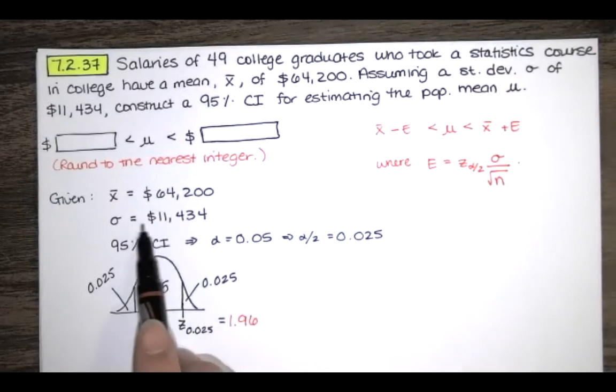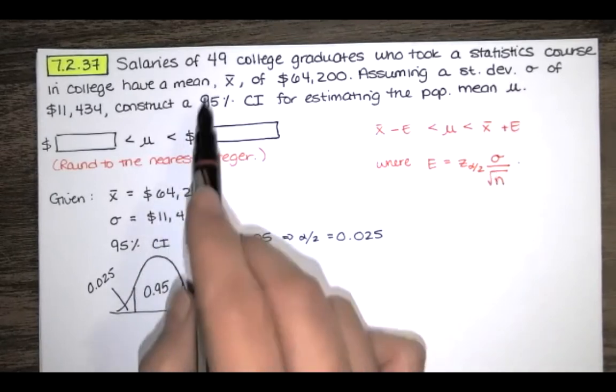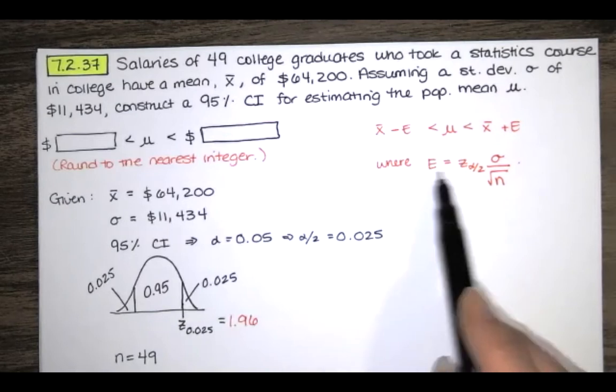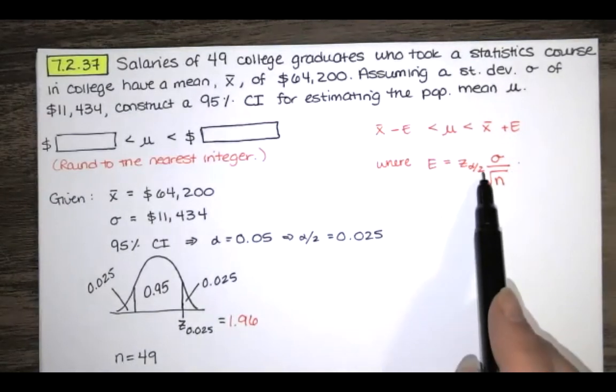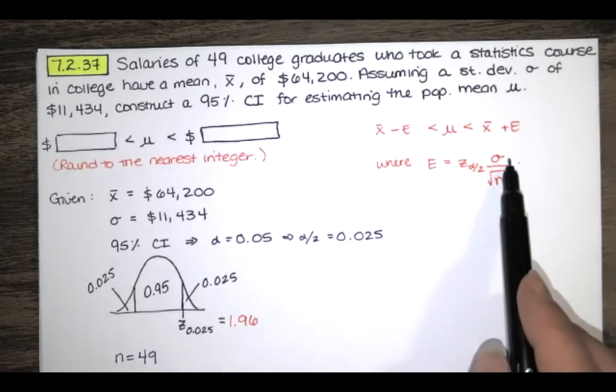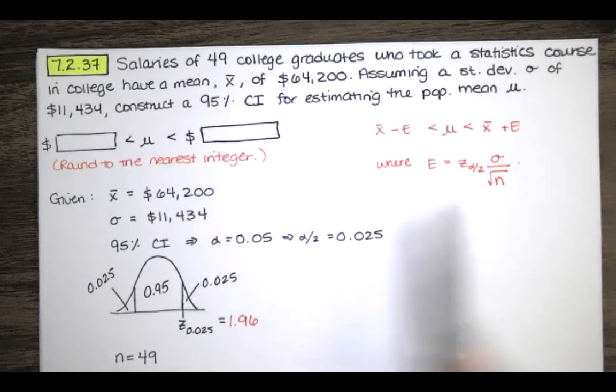So I've got my X bar. I've got my sample or my population standard deviation. I know that my sample size is 49 because we're looking at 49 salaries. And I think that's everything we need. We need X bar and then we need to compute the error. For the error, we need the critical value of Z, which we just found. That was implied by that 95% confidence interval. We need this, which was given to us. And we need the square root of the sample size, which happens to be 49. So we have everything that we need.